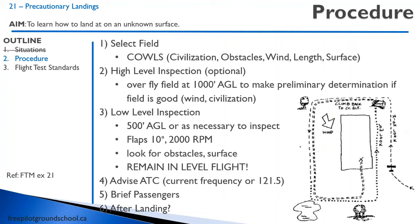The next thing you do is a high-level inspection. This is largely optional, but you're just going to overfly the field at 1,000 feet just to make a preliminary determination. Sometimes you're just going to do this on a downwind or as you're approaching the field. You don't really even need to fly it in a given direction, but it will tell you right away what the wind is like and whether there's civilization nearby.